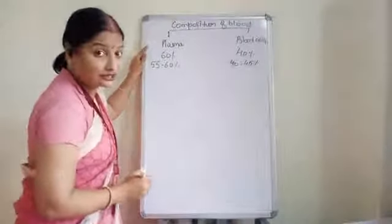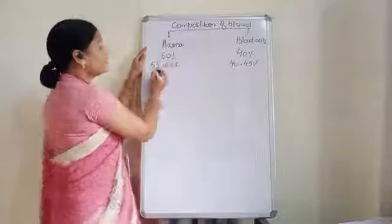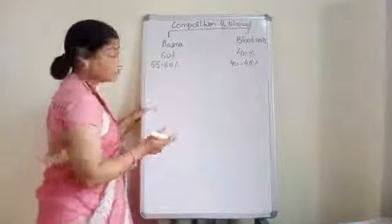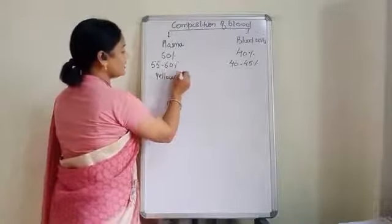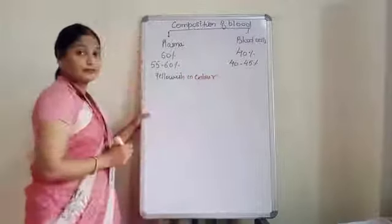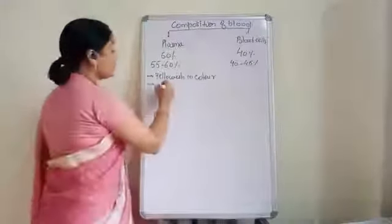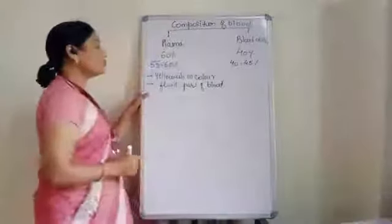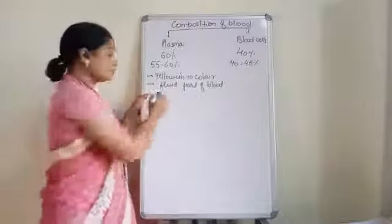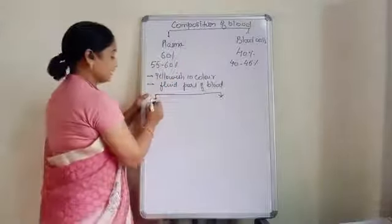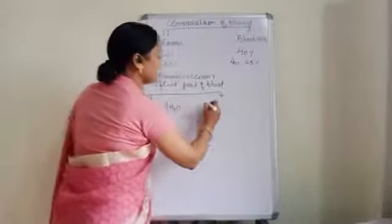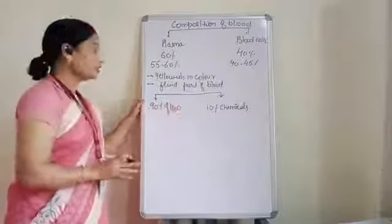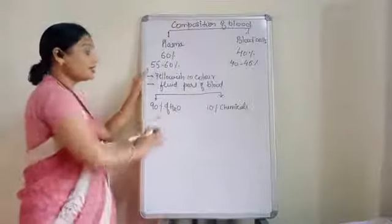Now we will see the composition of plasma — what is there in the 60% plasma. First, we will note the color and texture of plasma: it is yellowish in color and is basically the liquid or fluid part of the blood. Plasma is fluid because it contains 90% water, and it is yellowish because of the presence of 10% chemicals.